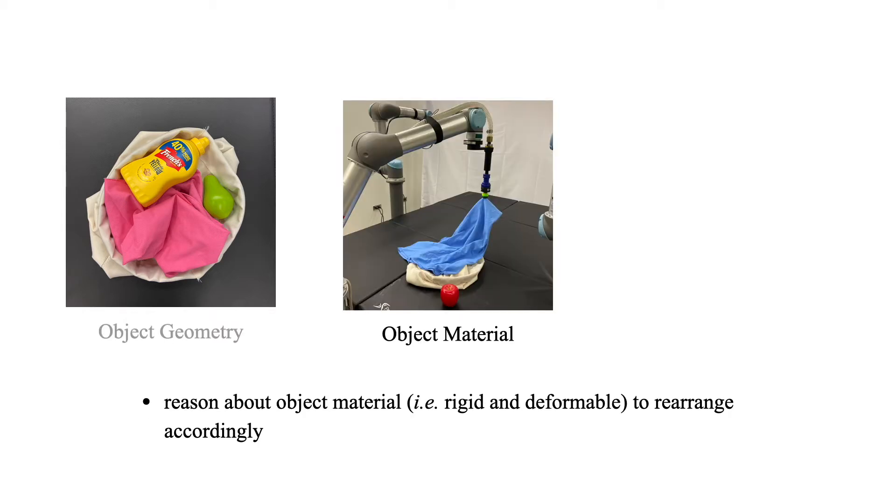Second, the object material. The robot must be able to reason about the material of the object and rearrange the objects accordingly. For example, a single pick and place might be enough for rigid objects, but we need to fold cloths so that they're inside the bag opening.